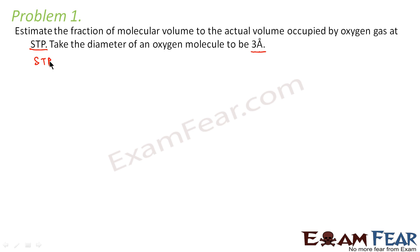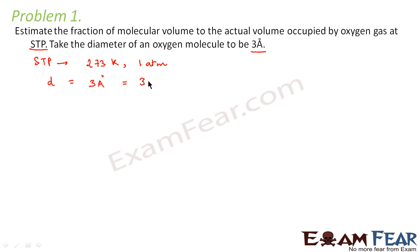First, let's see what is STP. STP is standard temperature and pressure. Standard temperature is 273 Kelvin and standard pressure is 1 atm. The diameter of the molecule is 3 angstrom, which is 3 × 10⁻⁸ centimeters. So we have to calculate the fraction of molecular volume to the actual volume.